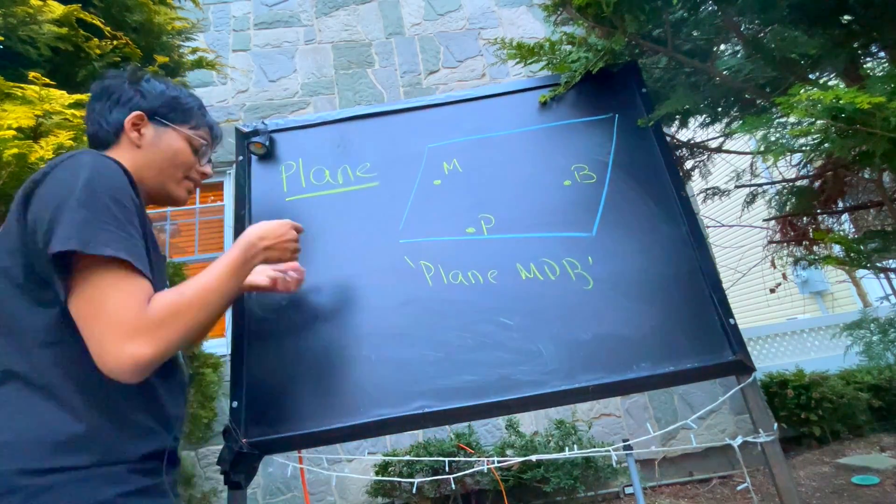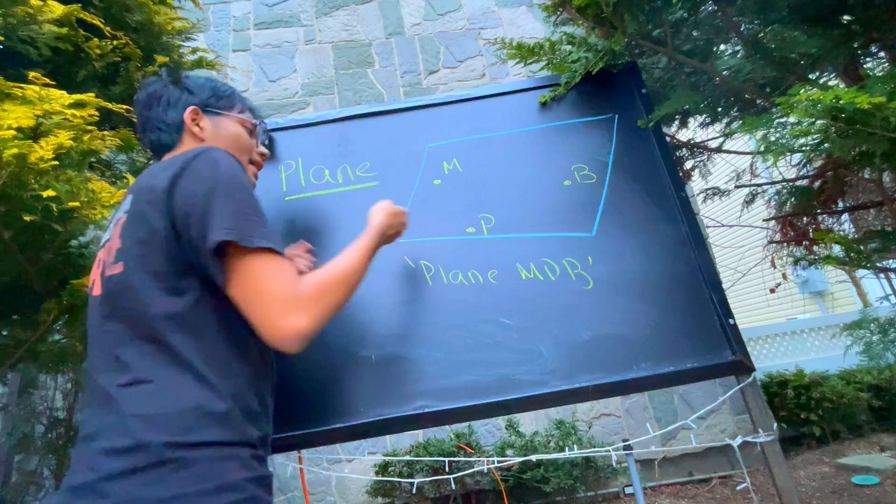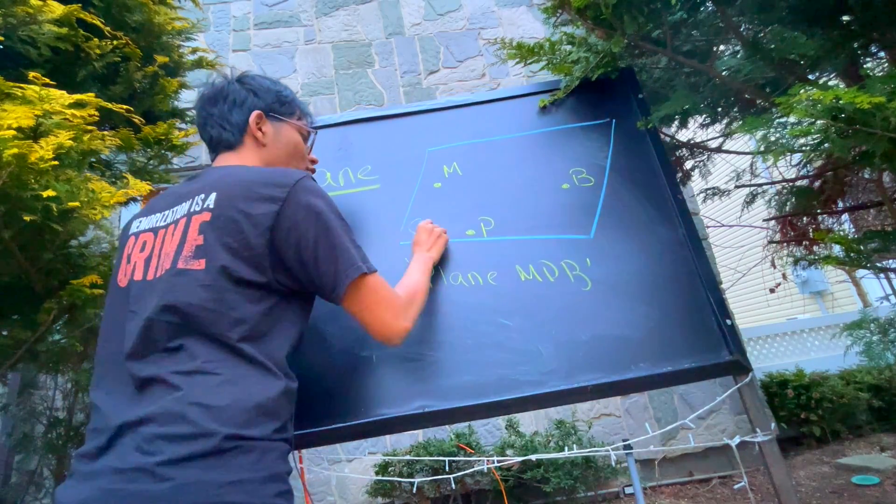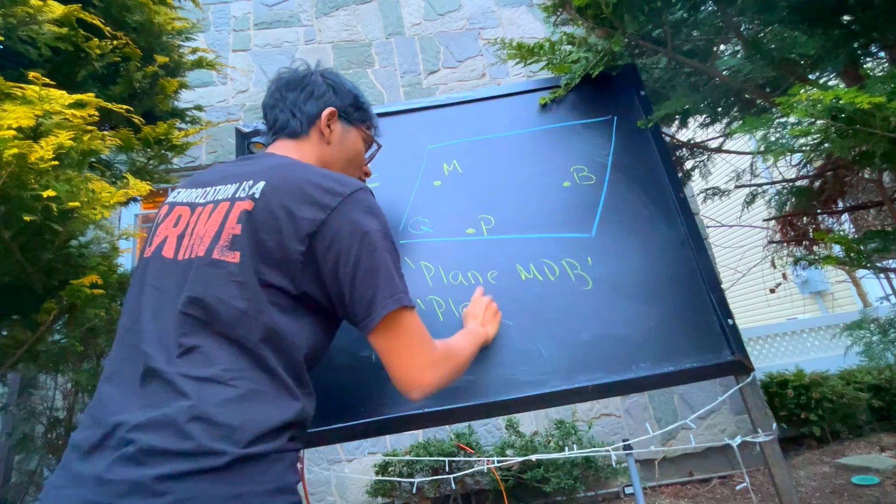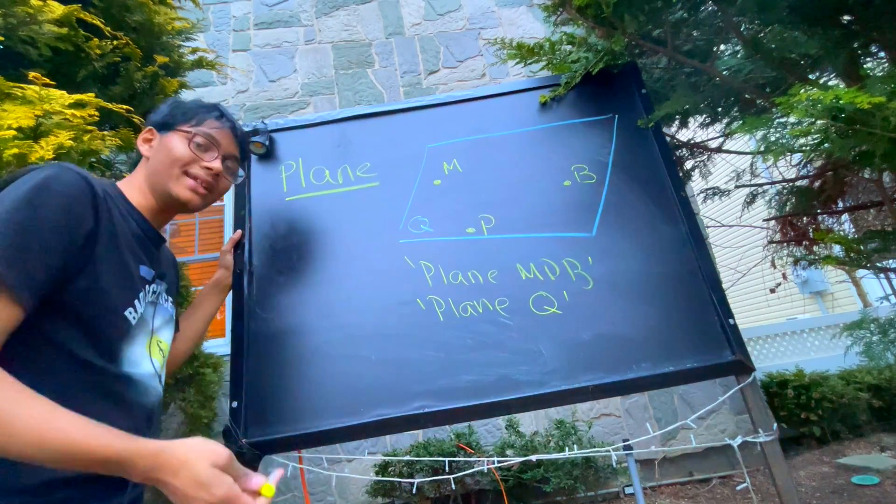I could also call it—if this plane had a special name, like let's say this had a Q over here, then I could call this plane Q. And that's all there is to naming planes.